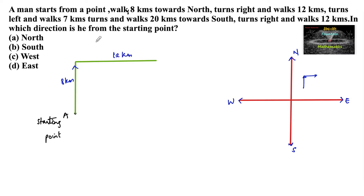He turns left and walks 7 km. When he is in the direction of east and takes a left turn, left means he is moving towards north again. He is moving towards the north again for 7 km. So let us consider this as 7 km.